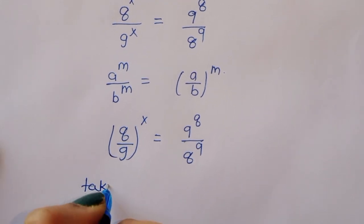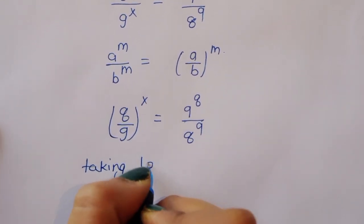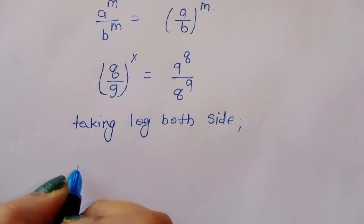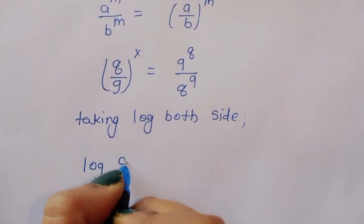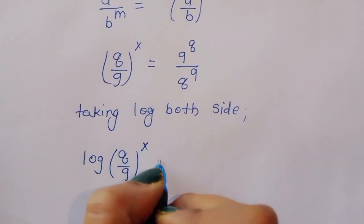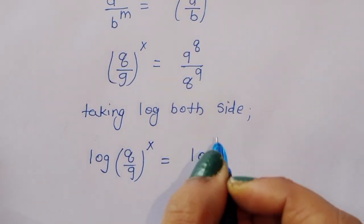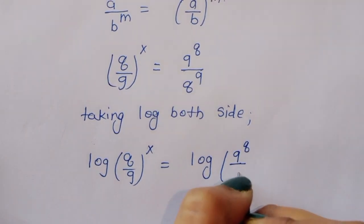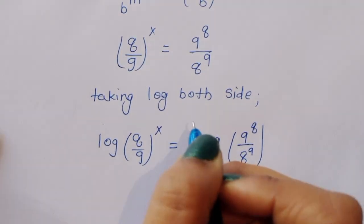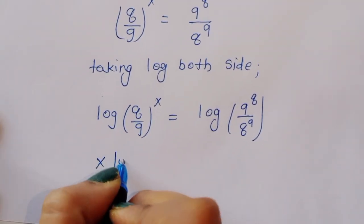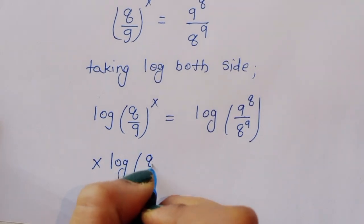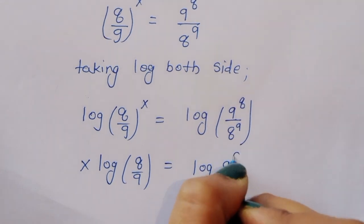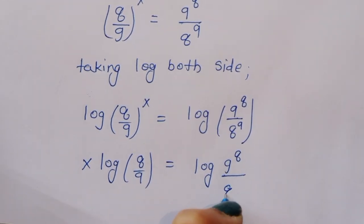Taking log on both sides, we get log of (8/9) power x is equal to log of (9 power 8 divided by 8 power 9). We can write this as x times log of (8/9) is equal to log of (9 power 8 divided by 8 power 9).